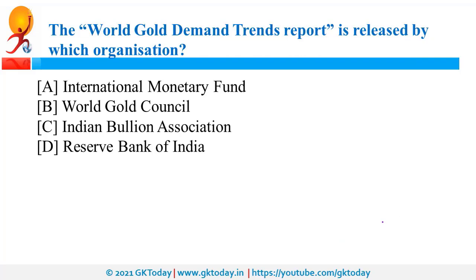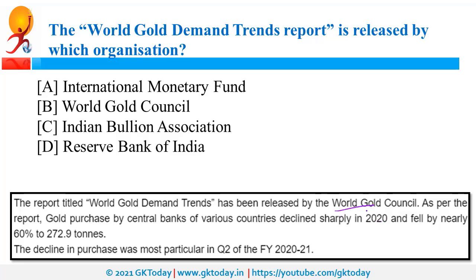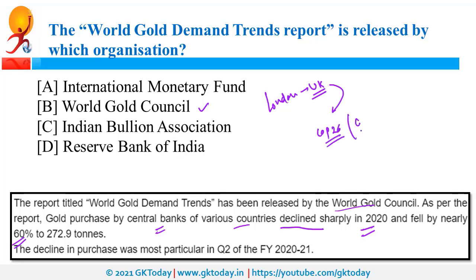The World Gold Demand Trends Report is released by the World Gold Council. As per this council, gold purchased by central banks of different countries sharply declined in 2020 by approximately 60%. The headquarters of World Gold Council is in London, UK. Recently, UK was in news as it is the host of COP26, which is going to be in Glasgow.